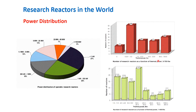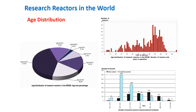In terms of power distribution, most reactors have greater than 1 kilowatt, at around 27%. Research reactors with power distribution from 1 kilowatt to 100 kilowatts are also common, while the smallest category — reactors with less than or equal to 100 megawatts — represents only about 3%. For age distribution, most research reactors, around 41%, have an age of 40 to 49 years, followed by those aged 30 to 39 years, then 20 to 29 years at 16%, then 50 to 59 years.